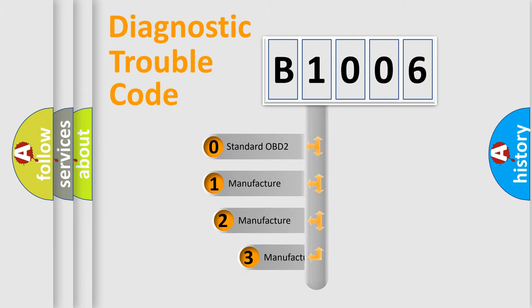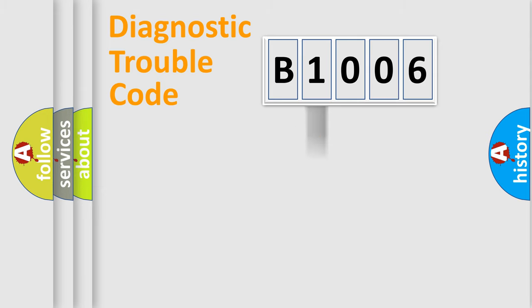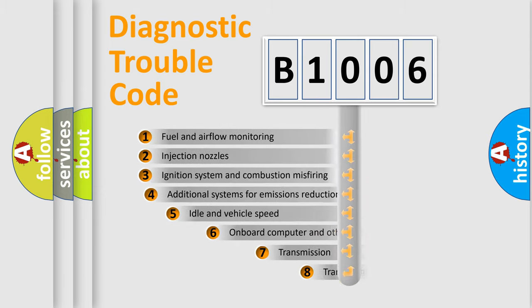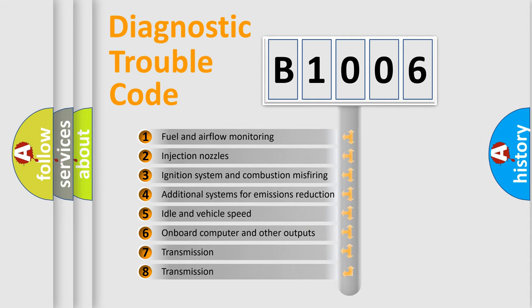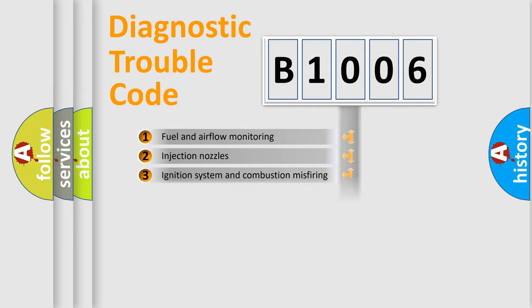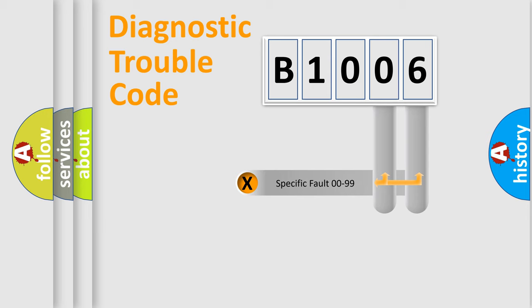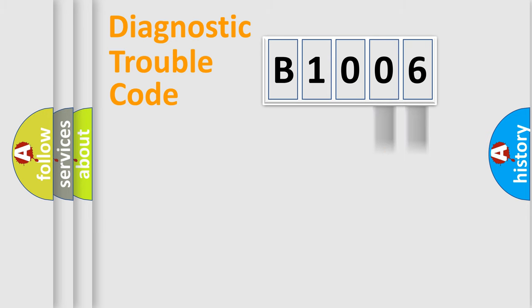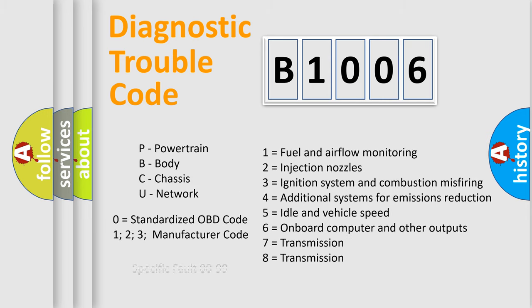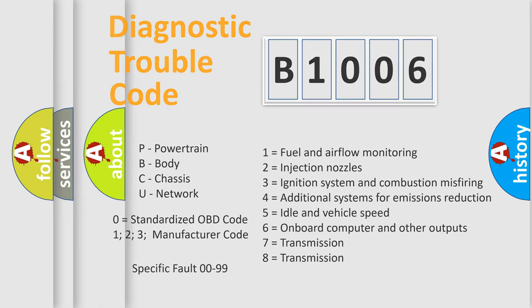If the second character is expressed as zero, it is a standardized error. In the case of numbers 1, 2, or 3, it is a more manufacturer-specific expression of the error. The third character specifies a subset of errors. This division is valid only for the standardized DTC code, and only the last two characters define the specific fault of the group.